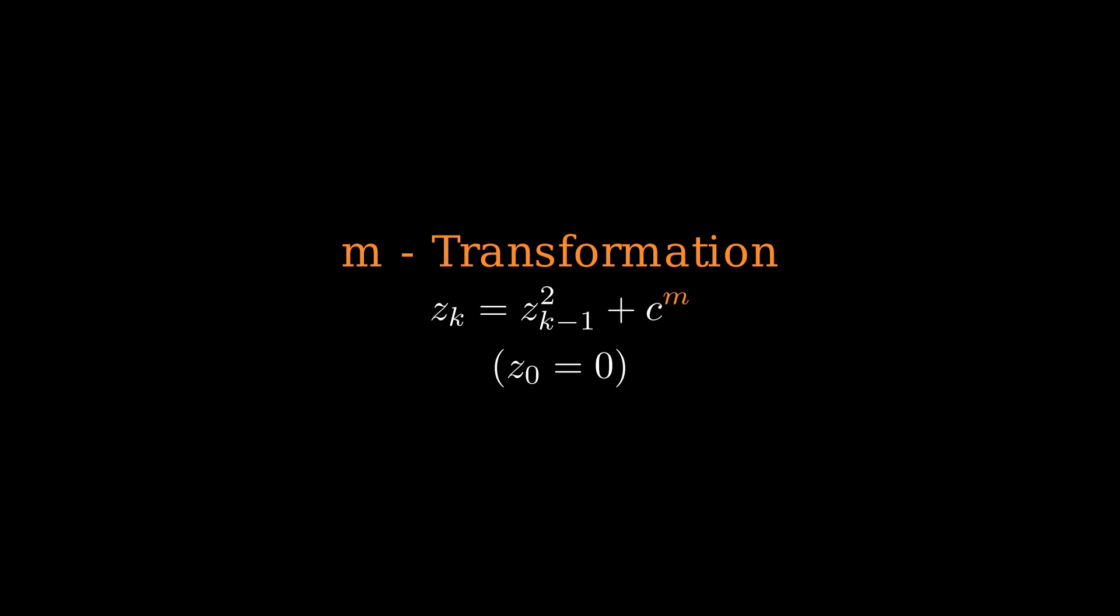Let's see what this transformation does to the Mandelbrot landscape by slowly decreasing M from 1 to minus 1. Let's go.